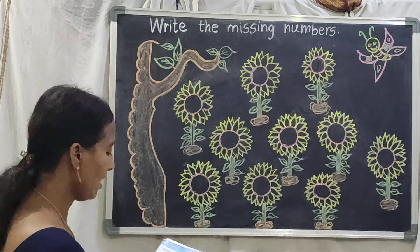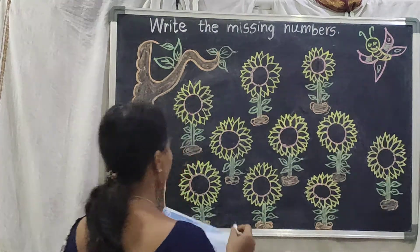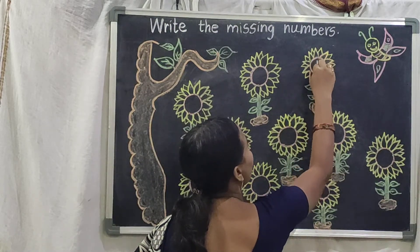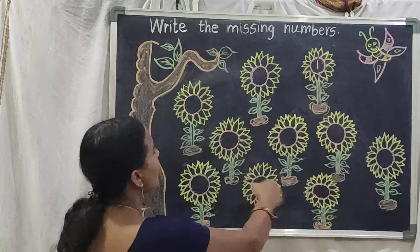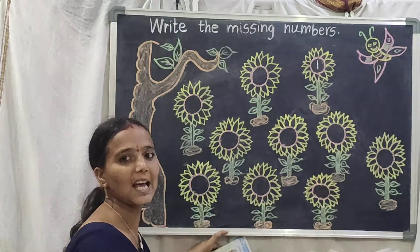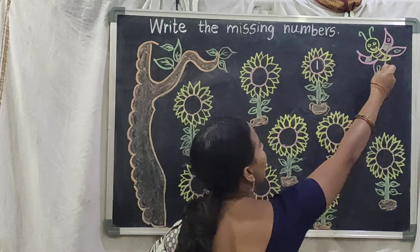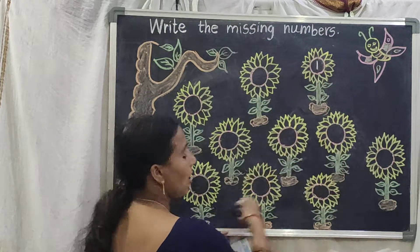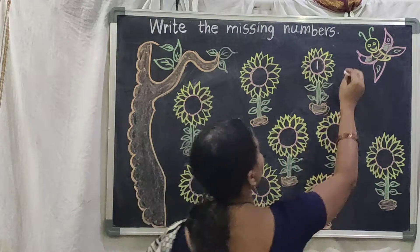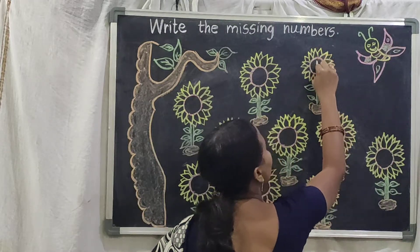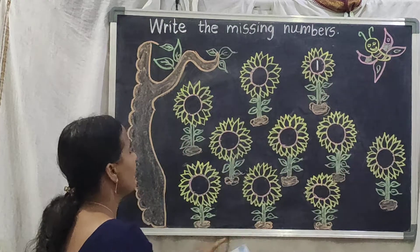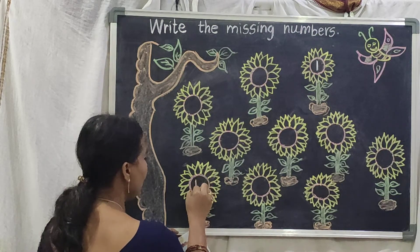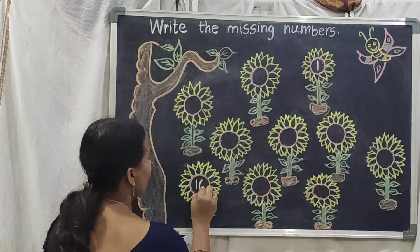What you should do here? Look here children. In your book, already they gave here 1 number. What are these? These are sunflowers. And see here, this butterfly is coming to all these sunflowers. Here they gave the 1 number and last they gave 10.